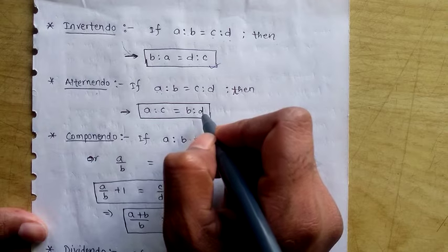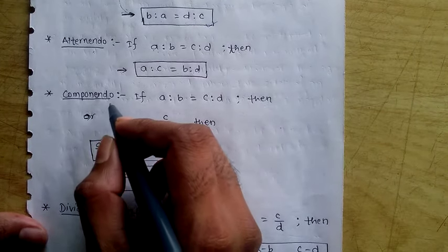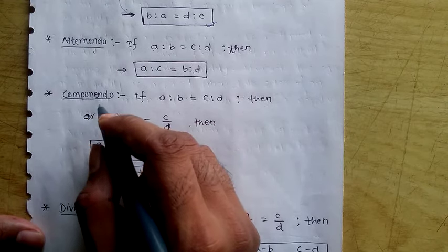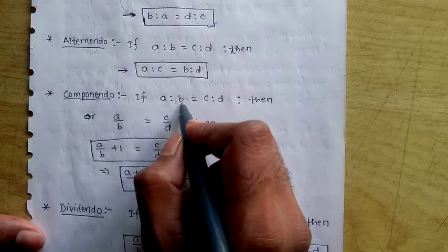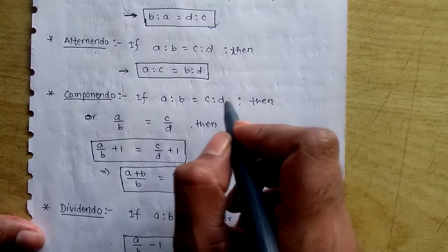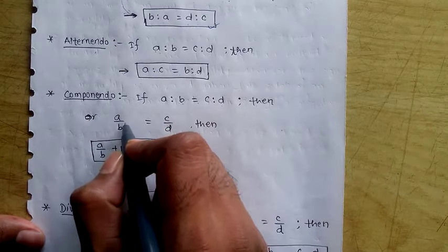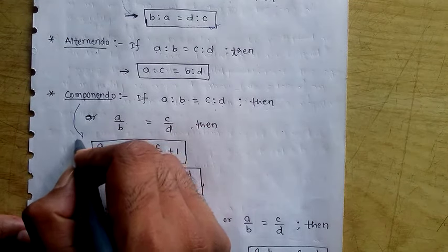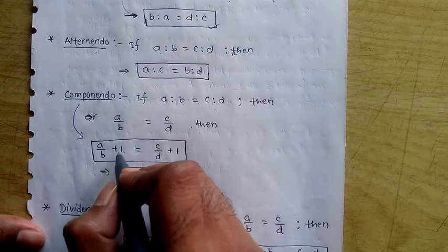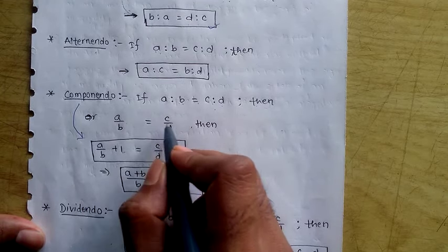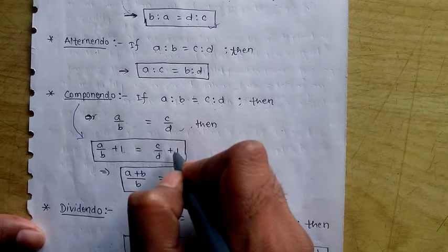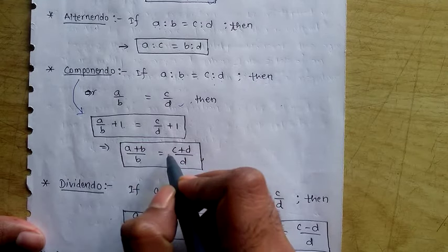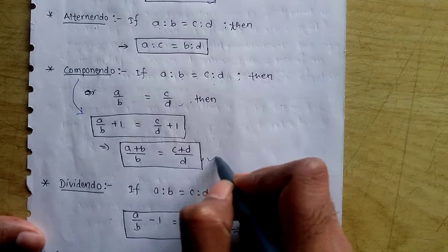The next one is Componendo. If a is to b equals to c is to d — meaning a/b = c/d — then we add 1 to both sides: a/b + 1 and c/d + 1. Simplifying both sides, we get (a + b)/b = (c + d)/d. This is the Componendo property.